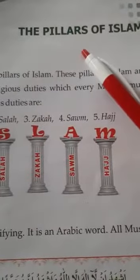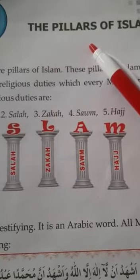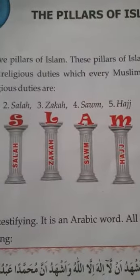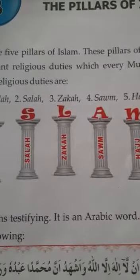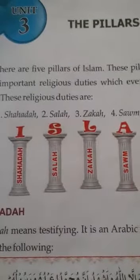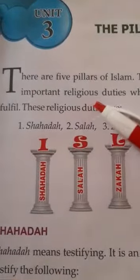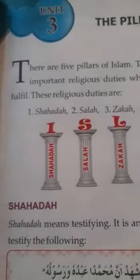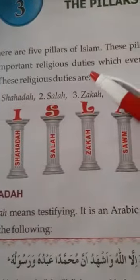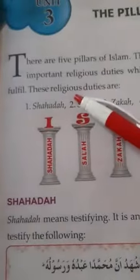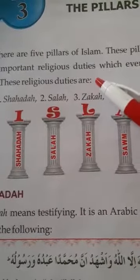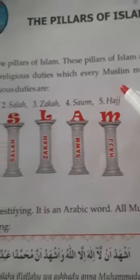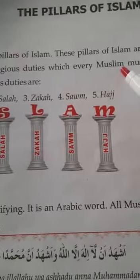What is a pillar? A pillar is an essential part of something that provides support, or which helps a building to stand strongly — that is called a pillar. So here there are 5 Pillars of Islam. These Pillars of Islam are important religious duties which every Muslim must fulfill.